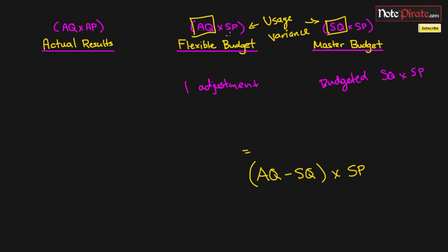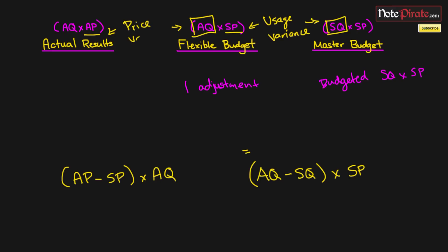The difference between the flexible budget and the actual results: the quantities are the same, but the only thing that differs is price. So the variance is calculated as actual price minus standard price, times actual quantity — since quantity is held constant — and this yields the price variance. Always remember: master versus flexible gives you the usage variance; flexible versus actual gives you the price variance.